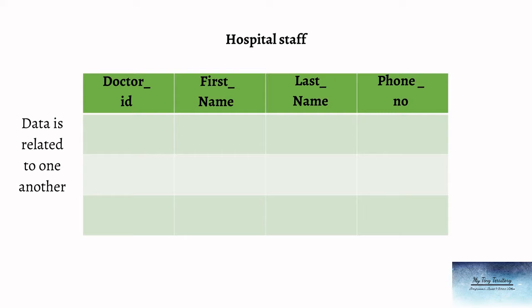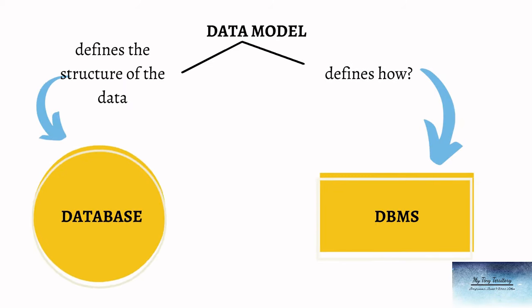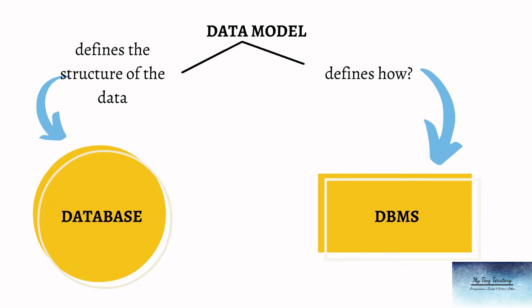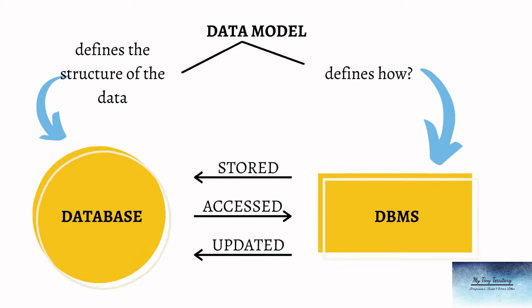For example, as you see on the screen we have a table for the hospital staff and all the columns have some data about the hospital staff. That means all the data is related to one another and also to the entity that is hospital staff. The data model defines the structure of the data but it also defines how the DBMS will manage the data in the database — that is how the data will be stored, accessed, or updated.